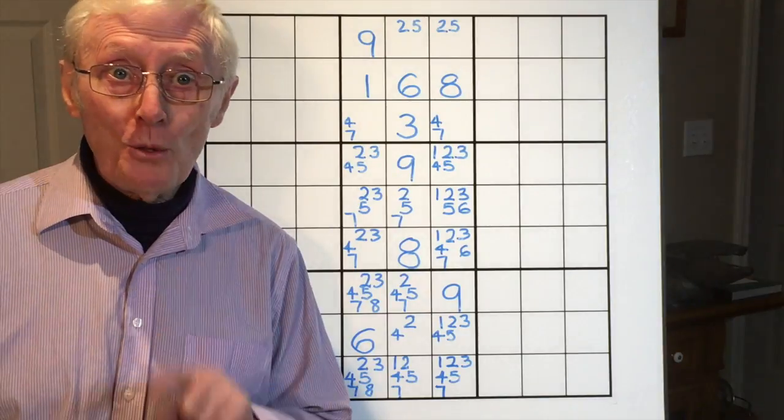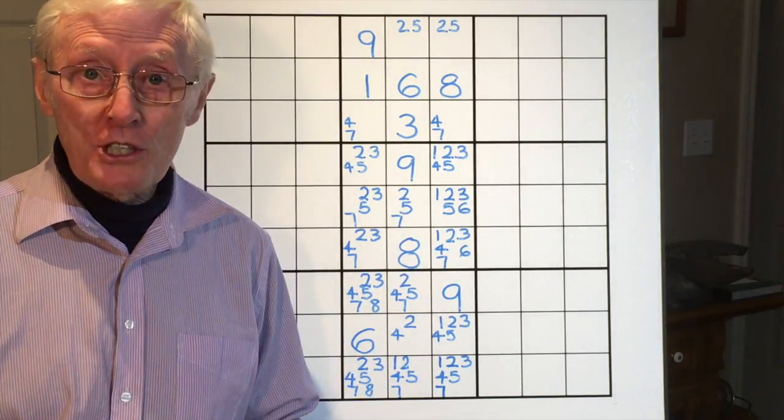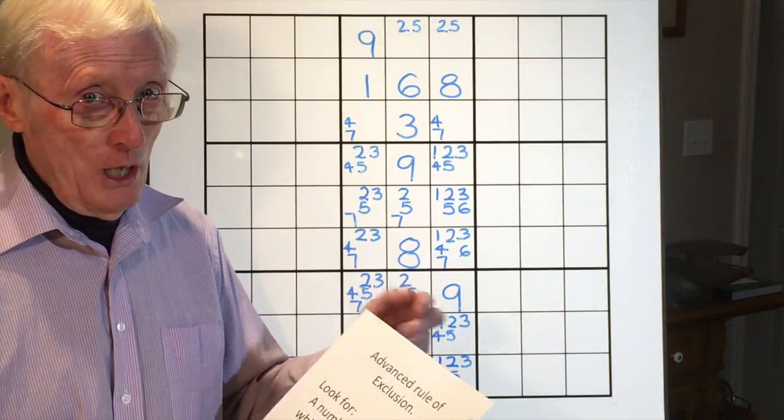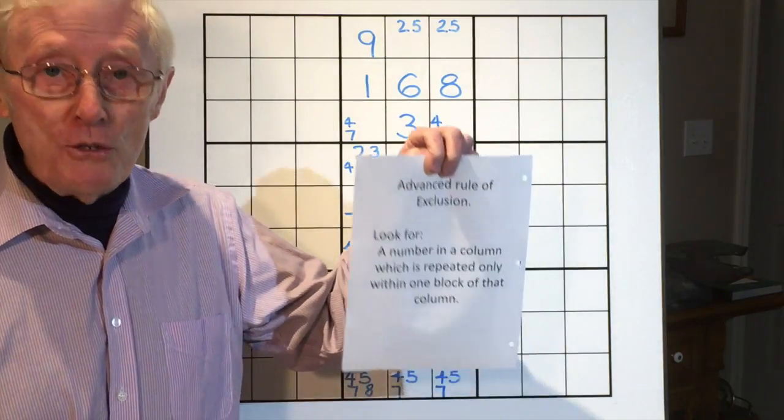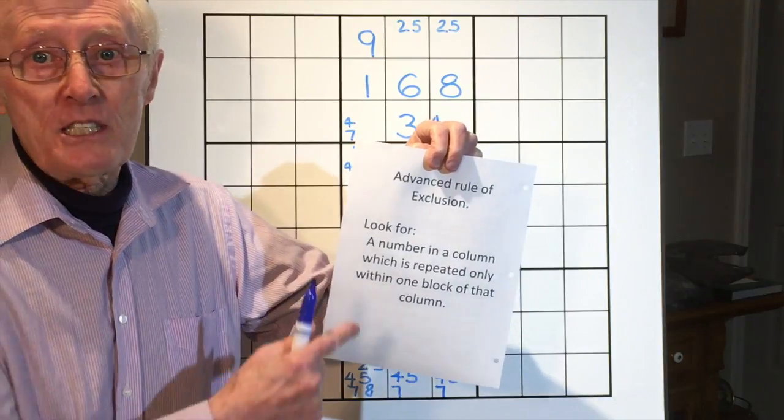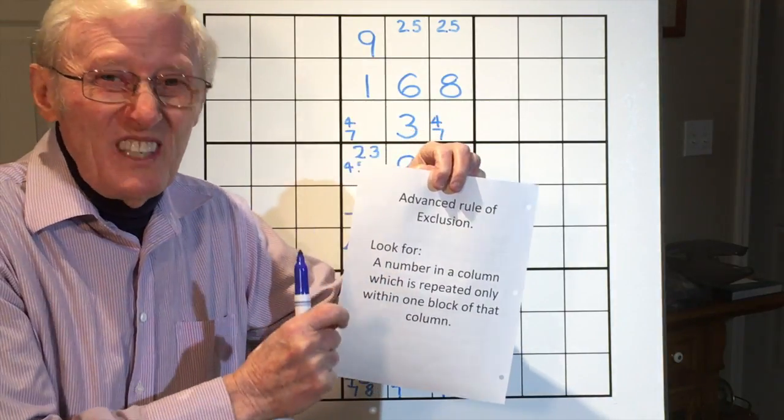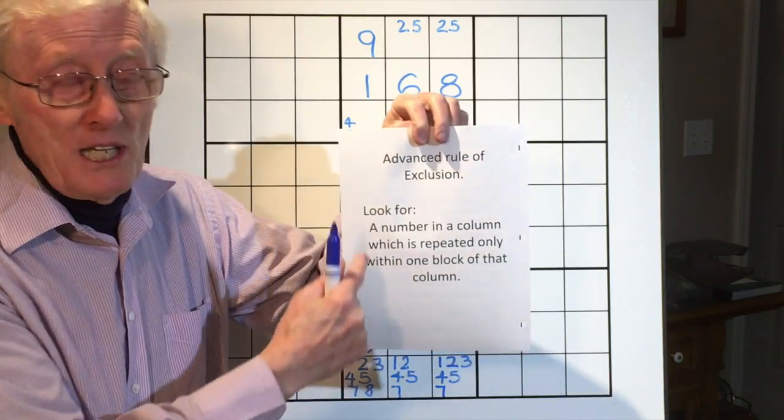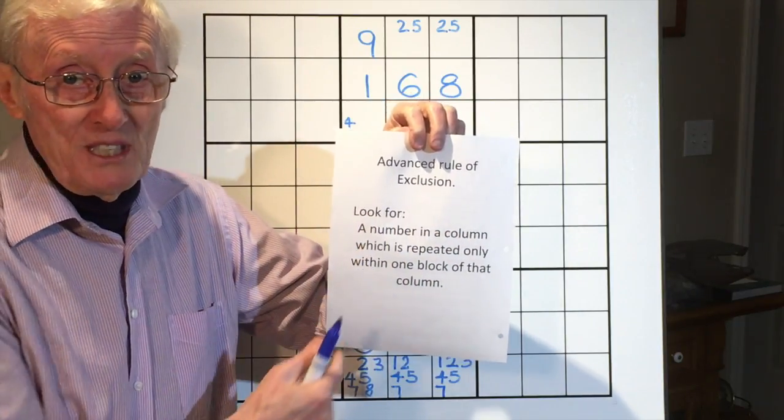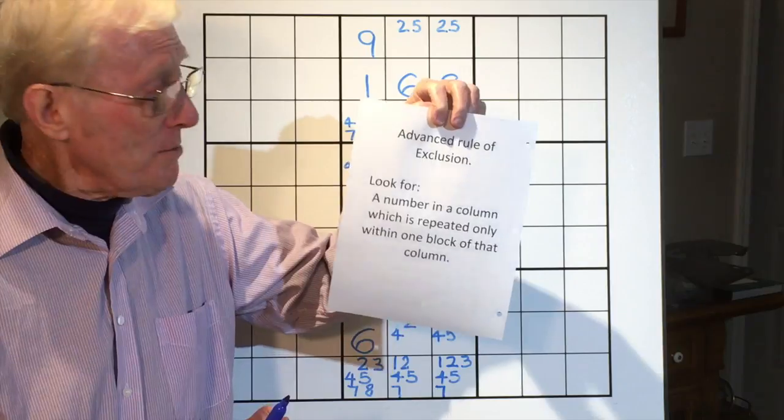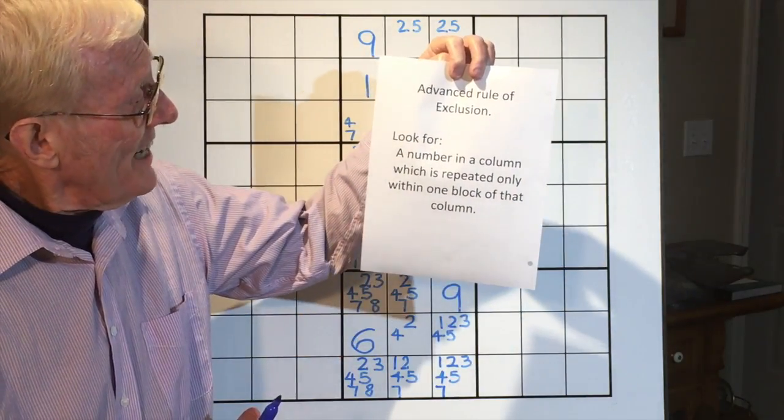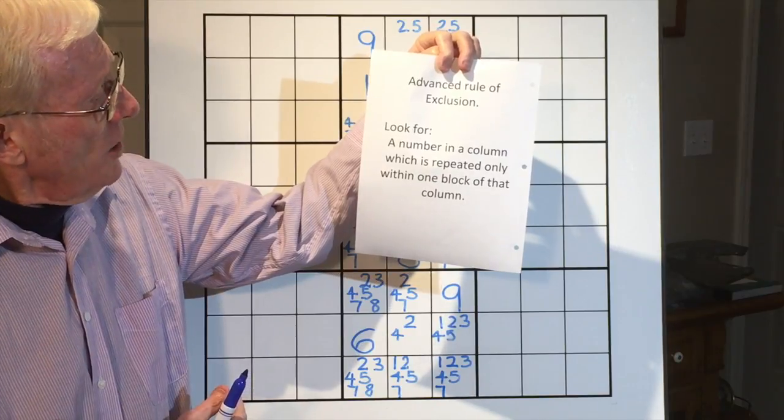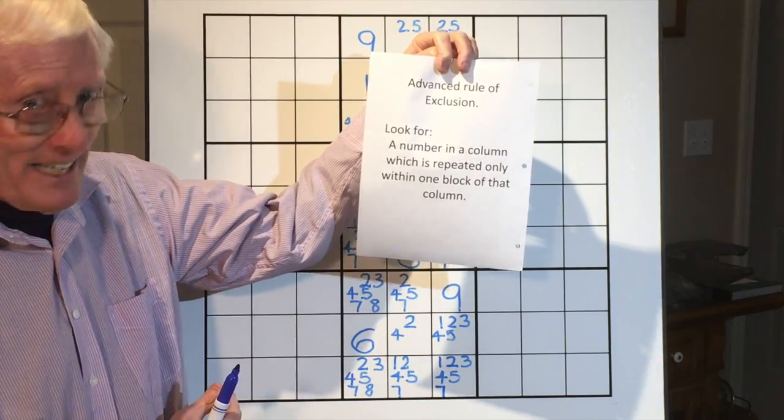And it's an important one because I'm introducing you to the advanced rule of exclusion. This is the sort of time where you're going to be using this type of rule to get rid of little numbers when you're doing difficult puzzles. Now, I'm going to put this up on the clip so you can take it down or write it down if you wish. But it says you're looking for a number in a column which is repeated only within one block of that column.